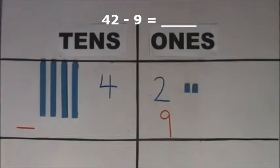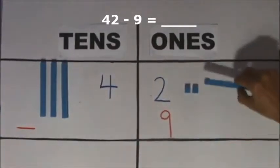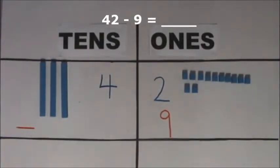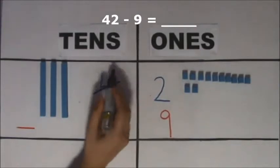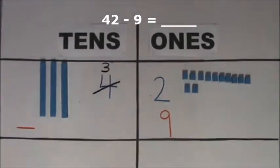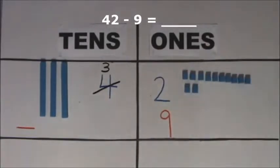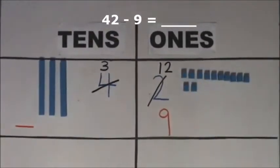We need to regroup 1 ten for 10 ones. We regroup 1 ten for 10 ones. How many tens do we have left? We have 3 tens left. How many ones do we have now? 10 and 2 make 12. We have 12 ones now.